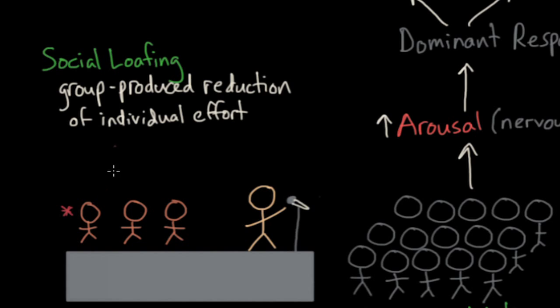Now, social loafing can be reduced by making the task more challenging, like adding a new component to the presentation, or separating the performance of individuals in the group, like giving each person their own grade as opposed to giving the entire group the same grade. Or you can make the performance of each person essential for success, like if each individual in the group had their own piece to work on for the presentation.